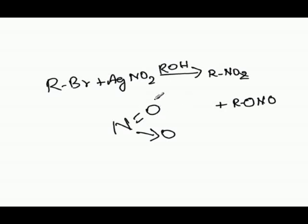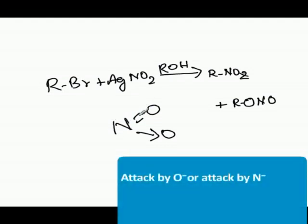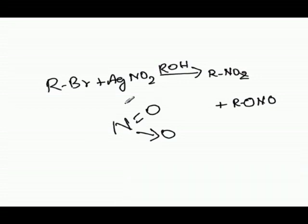It depends on the electron delocalization and the mode of attachment of the group with the required alkane or aryl group. In the first case, the mode of attachment is through nitrogen, and in the second case RONO, the mode of attachment is through oxygen.